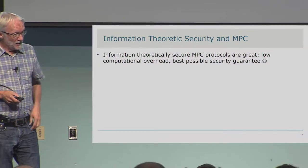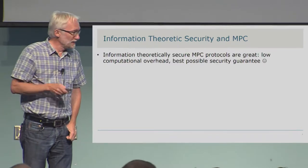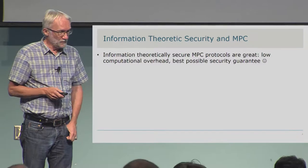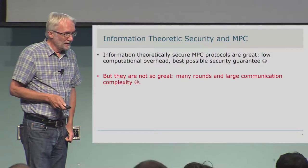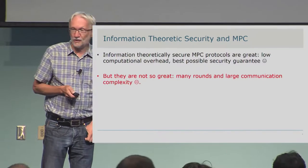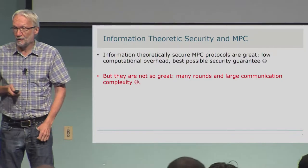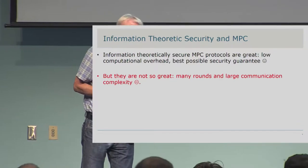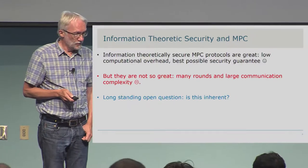As we all know, information-theoretically secure MPC protocols are great: low computational overhead, no fat here, best possible security guarantees. But they're not so great because you have to have many rounds and large communication complexity, at least as far as we know from the protocols we know about. A very important long-standing open problem is whether those costs are inherent.